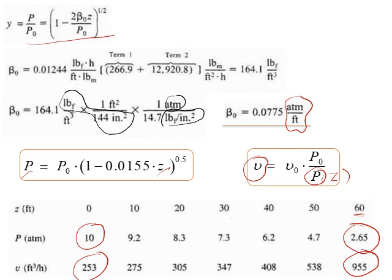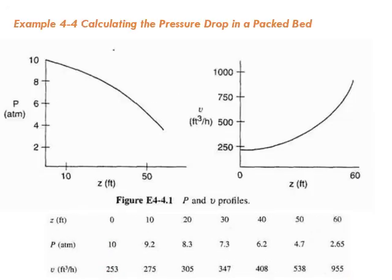And of course, if the volumetric flow rate is increasing a lot, that means the concentration will decrease a lot, and therefore decrease the concentration or reduce the rate of reaction, therefore reducing the achievable conversion. Here is the plot. You can see how pressure drops as you go down the length of the reactor, and you can as well see how the volumetric flow rate increases as you go down the length of the reactor through the bed.